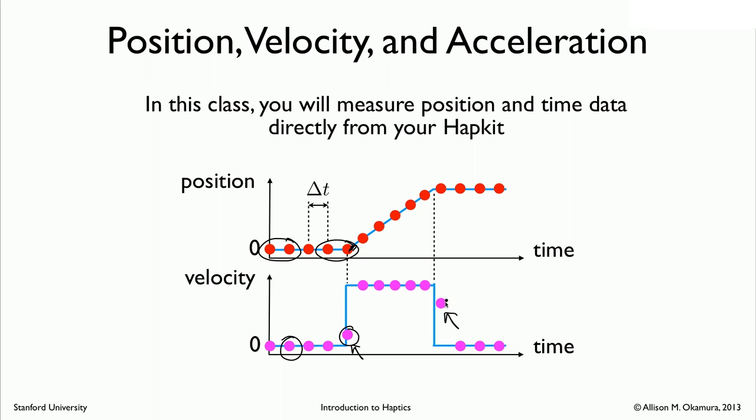And then similarly, up here, when you measure or you come up with an estimate for the velocity at this point here, that's going to be the difference between these two positions divided by delta t. Because the difference between these two positions is going to be slightly less than the new position, the velocity is actually decreasing there. And then eventually you'll go back to zero.